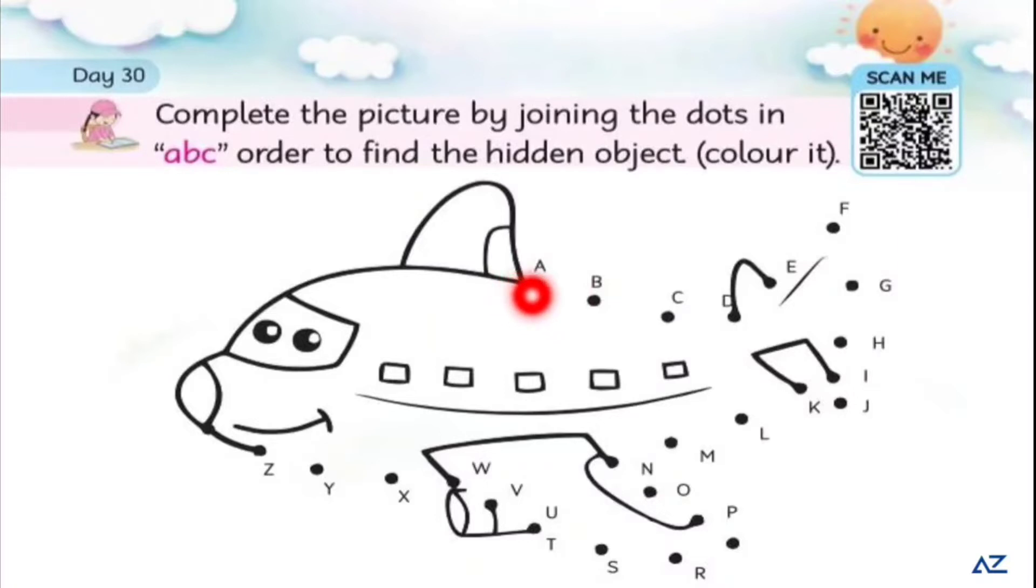You will go dot to dot, okay? First you will put on the A, B, C, D, E, F.